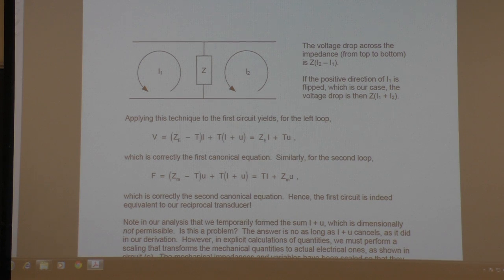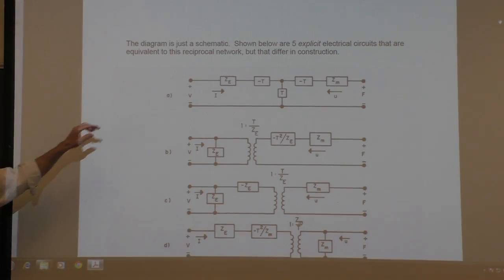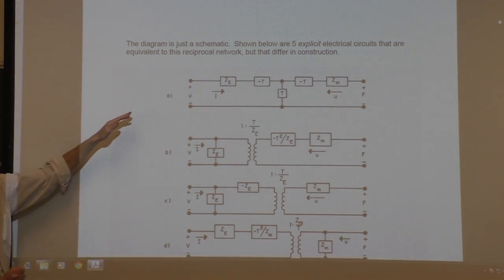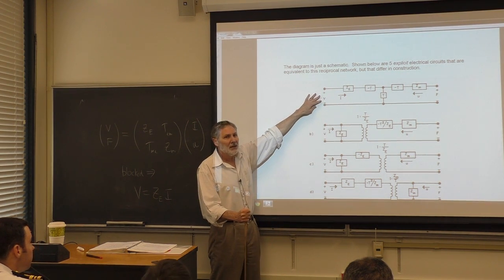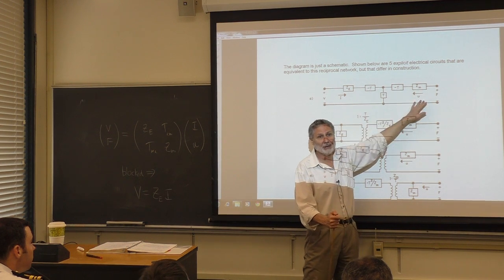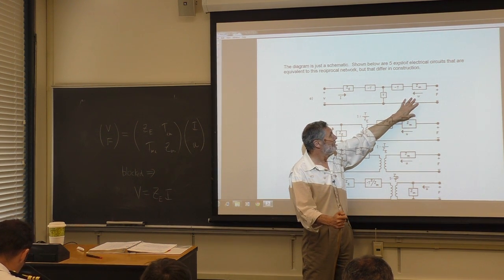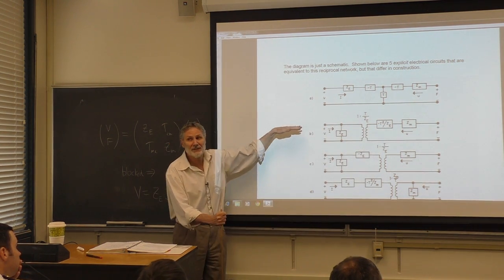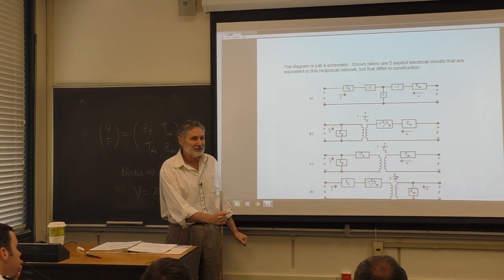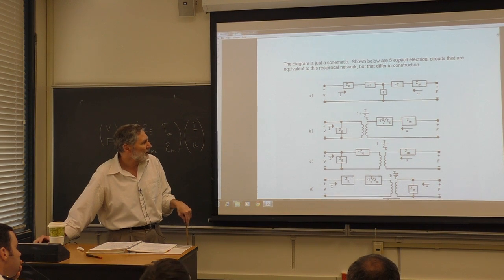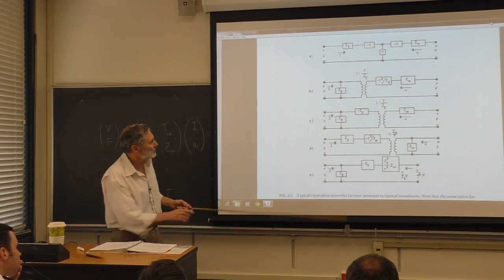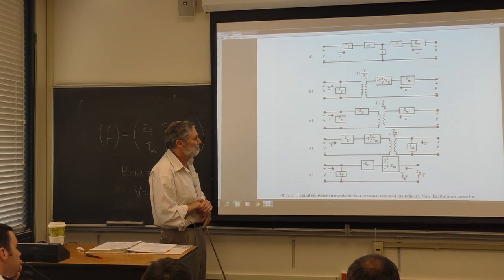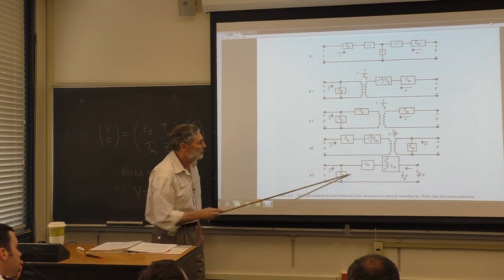We've proved this first equivalent circuit. However, it ultimately fails us because u is not a genuine current — it has different dimensions. That's one reason we need the other equivalent circuits. Next time we'll do the second one, which involves normalization scaling force in newtons to volts, and we'll also discuss the need for transformers.